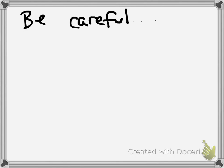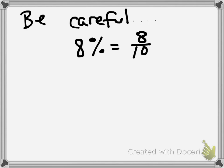There is one spot where you need to be careful: when we have single-digit percents. For example, 8%. If you do method number one and write this as a fraction, then 8% equals 8 out of 100, and I can read that as eight hundredths. You have to be careful about writing this correctly — it's not eight tenths, it's eight hundredths.